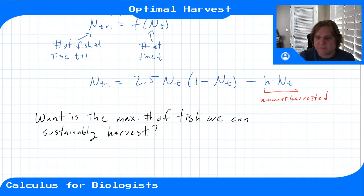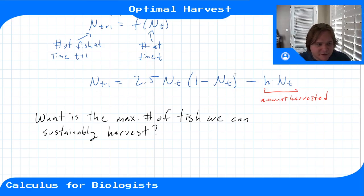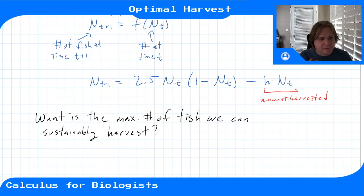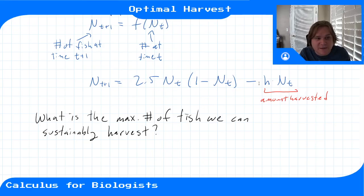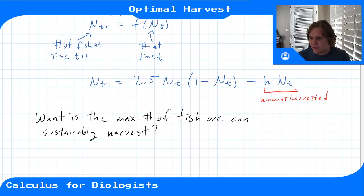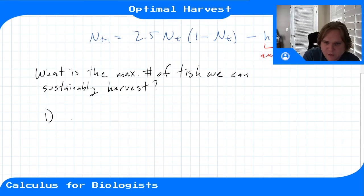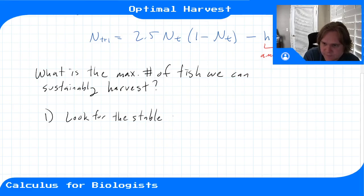The trick with this problem is to wait until the population is at equilibrium, and then we'll be able to harvest this h amount. The equilibrium point is going to depend on h, and that will tell us that when h is a certain number, the stable equilibrium will remain stable no matter what. So for this problem we're going to first look for the stable equilibrium point.